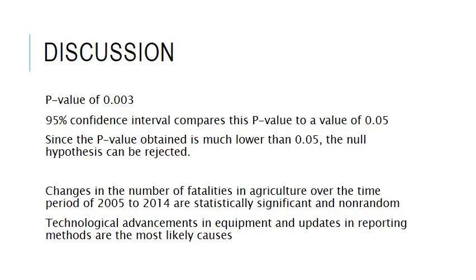The p-value of 0.003 caused the null hypothesis to be rejected, indicating that there is a statistically significant relationship between the variables analyzed. This indicates that any changes seen in the number of fatalities in agriculture over the time period of 2005 to 2014 are statistically significant and non-random. The most likely causes of the decreases in fatalities are technological advancements in equipment and updates in reporting methods.